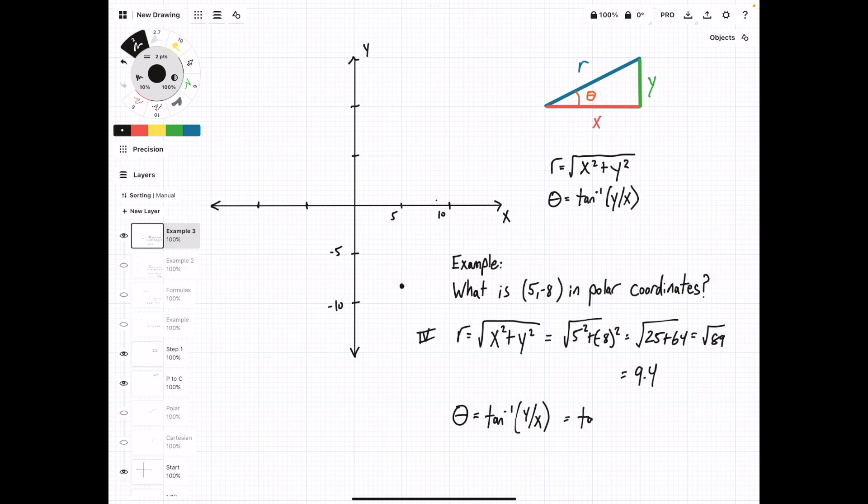And now finding theta: arc tan of negative 8 over 5 equal to negative 58 degrees. So you can write polar coordinates using a negative theta value, but typically they're written with a positive value. And when you're in quadrant 4, the rule is to add 360 degrees to this value.